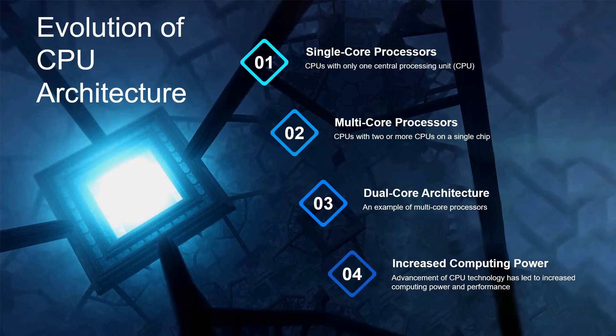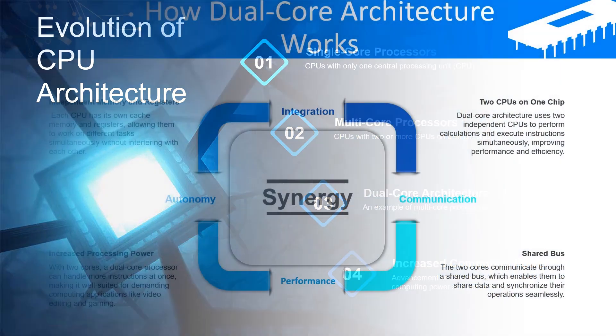First of all, let's see the evolution of CPU architecture. There are 4 evolution steps: single core processors, then multi-core processors, then dual core architecture, and finally increased computing power.